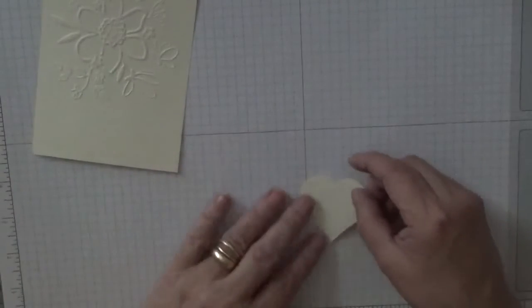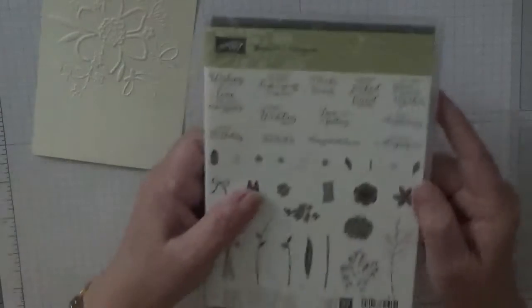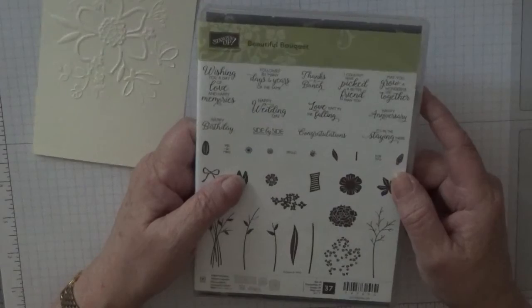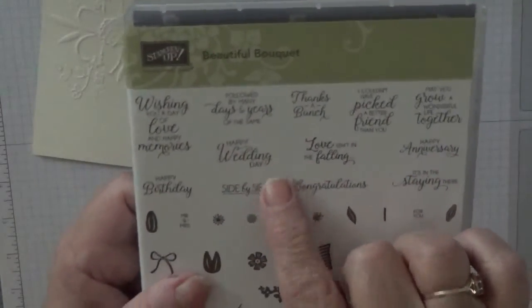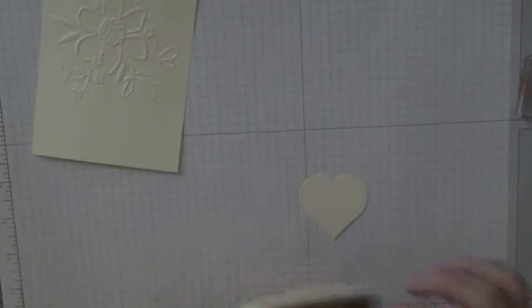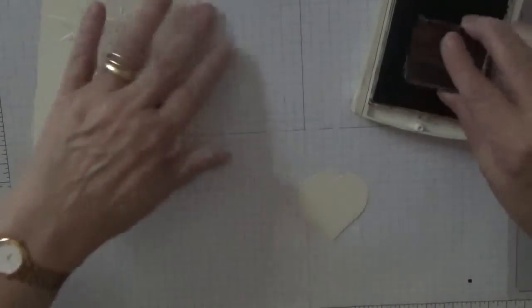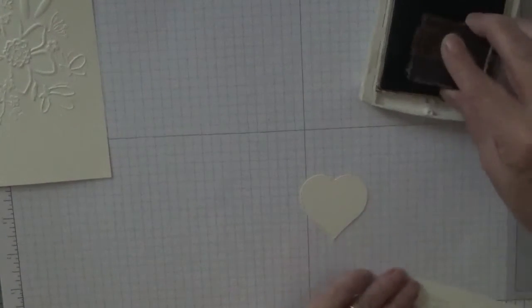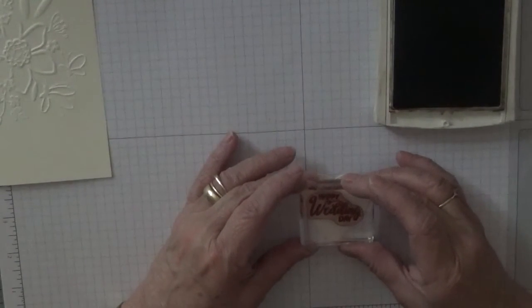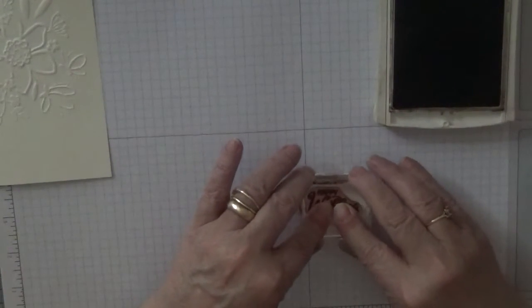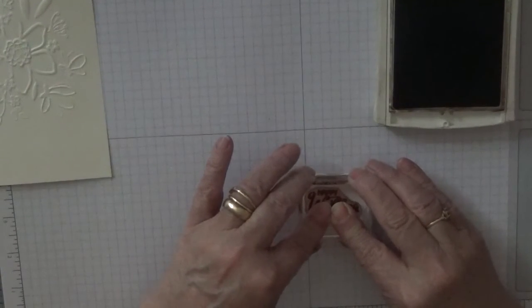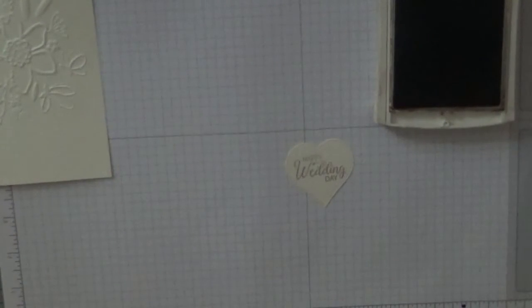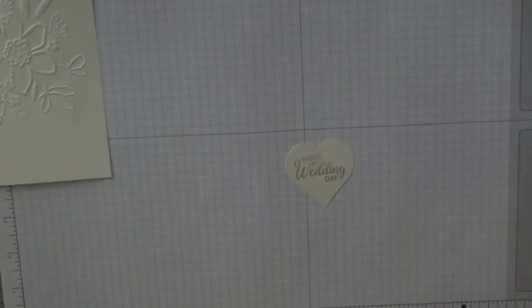Next thing we're going to do is stamp our sentiment. The sentiment comes from Beautiful Bouquet and it's just got happy wedding day. So we're using that one there, already mounted, and I'm going to stamp it in soft suede I think. Let me see how dark it is. No that's just what I want. Please stamp it straight. Oh yeah, that's nice. That's nice. I like that.